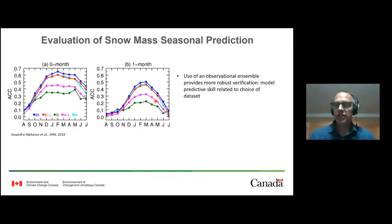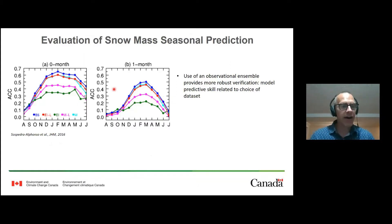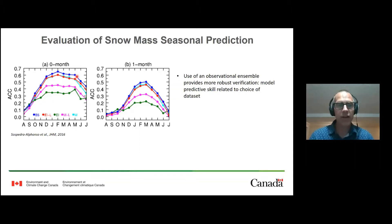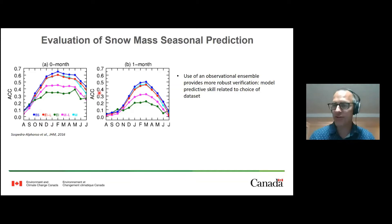Our colleagues at Environment Canada who do seasonal prediction have looked at how well they can verify using hindcast model simulations their predictions of snow mass across the hemisphere. What they find is that if they use individual products, verification statistics vary considerably. Interestingly, the model appears to perform better when verified using the blended average of a number of products. This suggests that using an observational ensemble provides more positive and more robust results for evaluating predictions at seasonal time scales.